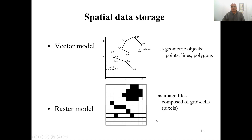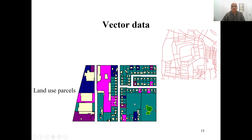Spatial data represented as points, lines, or polygons can be stored in two models: the vector model and the raster model. We will discuss both in detail later in the course. In brief, the vector model stores data as geometric objects using points, lines, and polygons, whereas the raster model stores data as image files composed of grid cells called pixels. Both represent the same spatial information but in different formats — one as vector, the other as raster — and each has its own advantages and limitations.